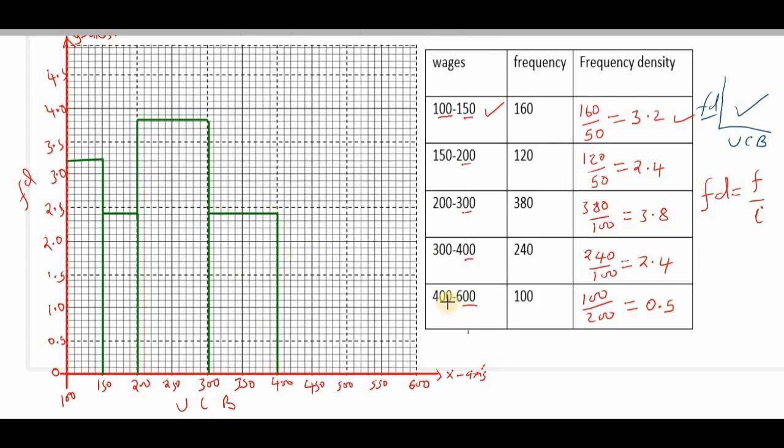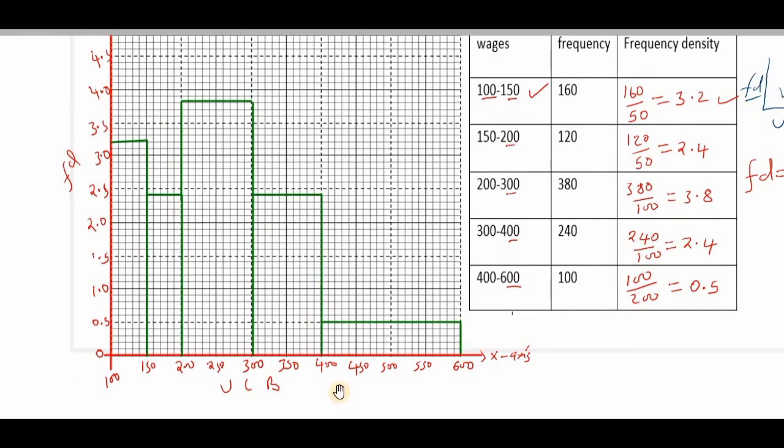Then finally from 400 to 600, we have 0.5. And finally that is the histogram required. Remember this is upper class boundaries, and here we have frequency density.